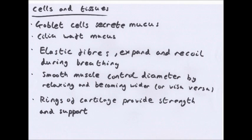Smooth muscle controls the diameter of the airways. It can relax and become wider, increasing the diameter of the trachea in particular, or it can contract and become thinner. For example, if you are breathing in a high concentration of carbon monoxide, contracting the smooth muscle reduces airflow so you get less of that toxic gas. It can also widen the airway when you're running and need more oxygen. The area inside the trachea, bronchi, and bronchioles is called the lumen.